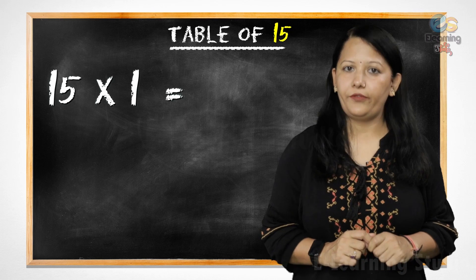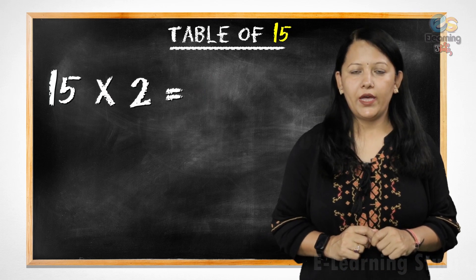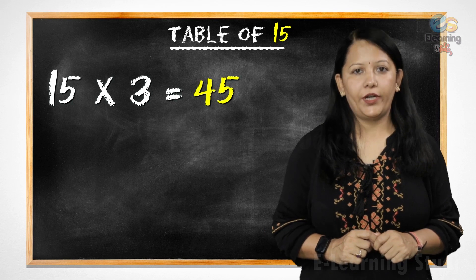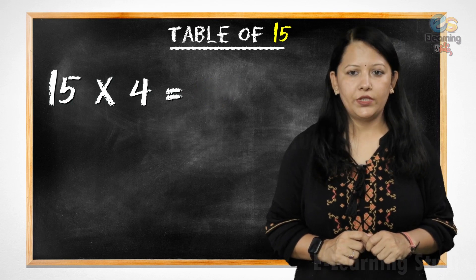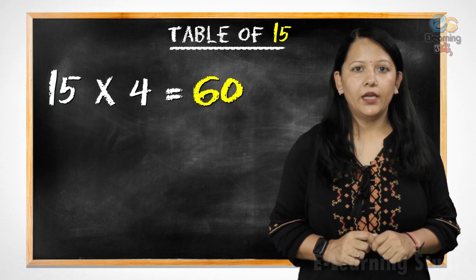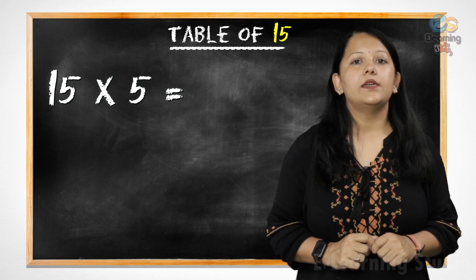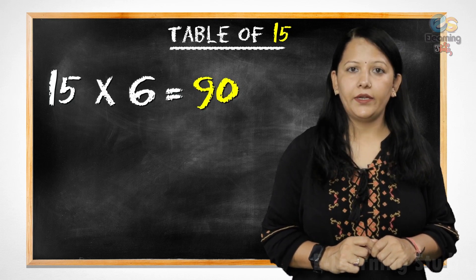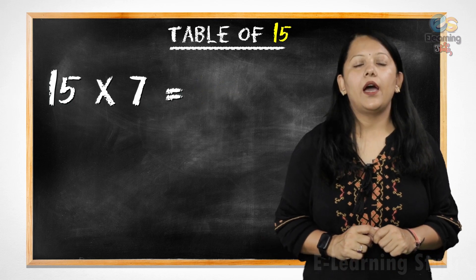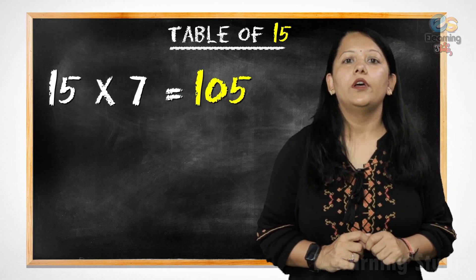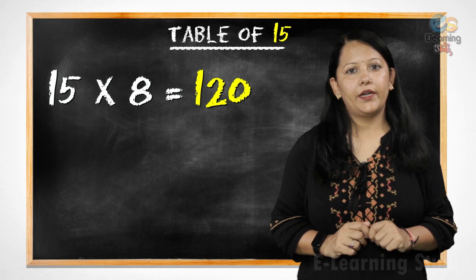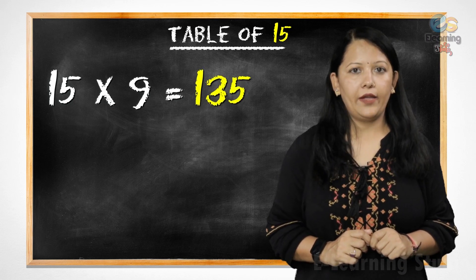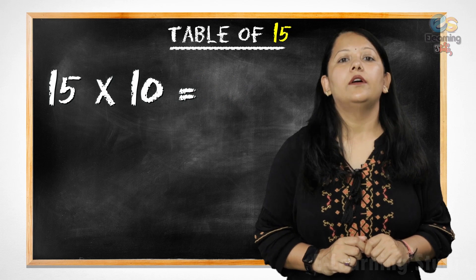15 ones are 15, 15 twos are 30, 15 threes are 45, 15 fours are 60, 15 fives are 75, 15 sixes are 90, 15 sevens are 105, 15 eights are 120, 15 nines are 135, 15 tens are 150.